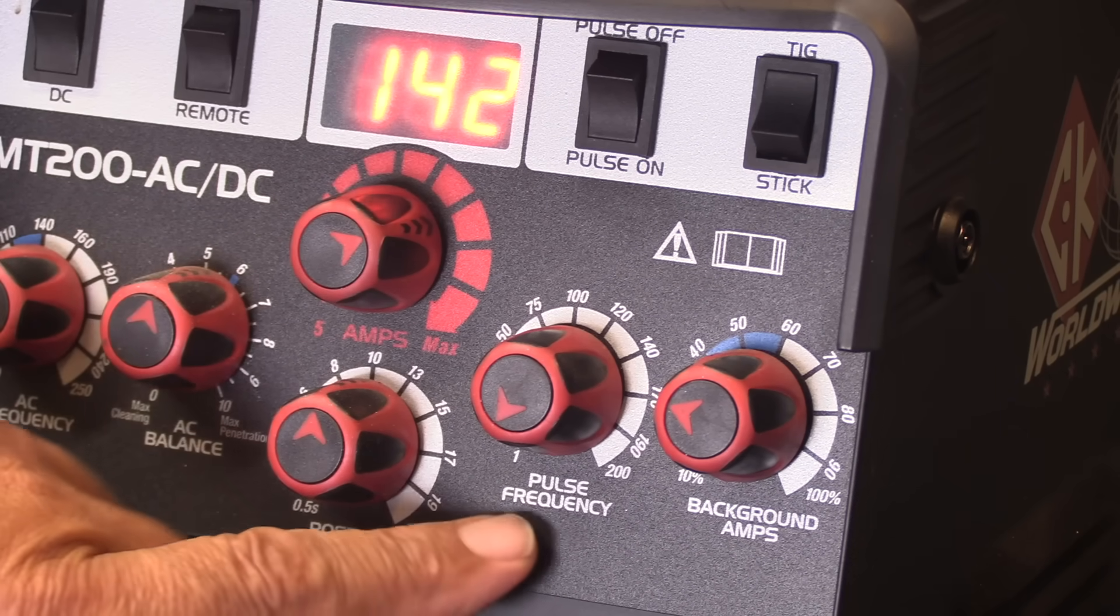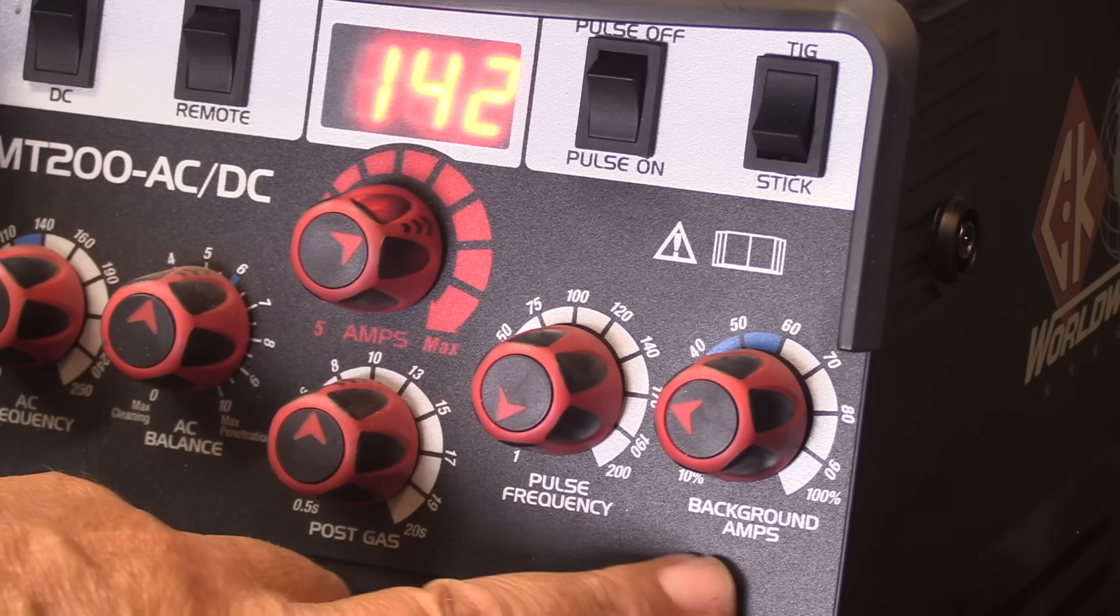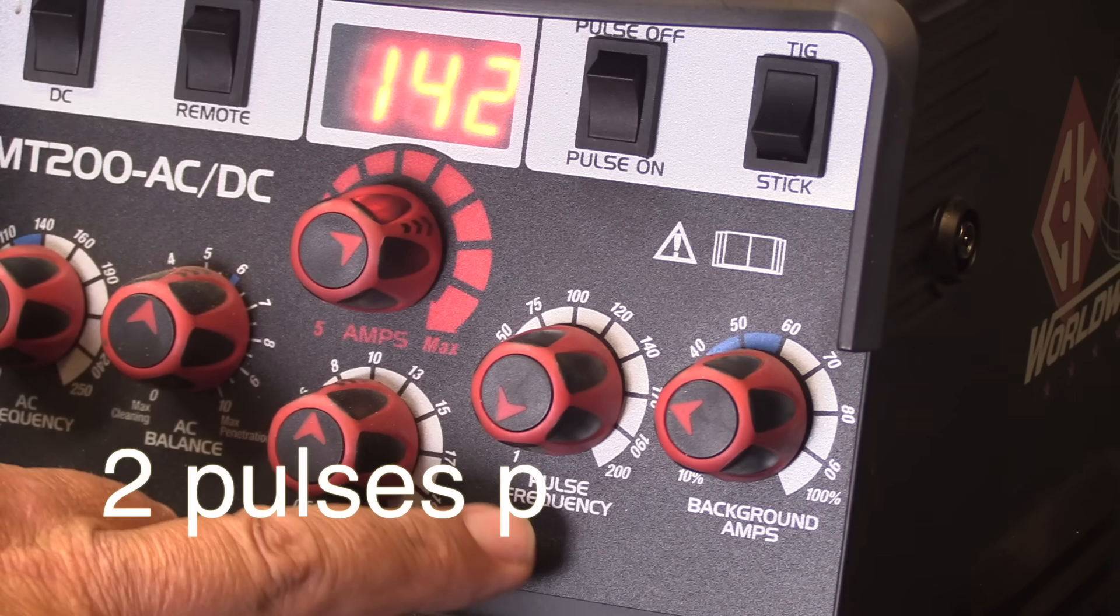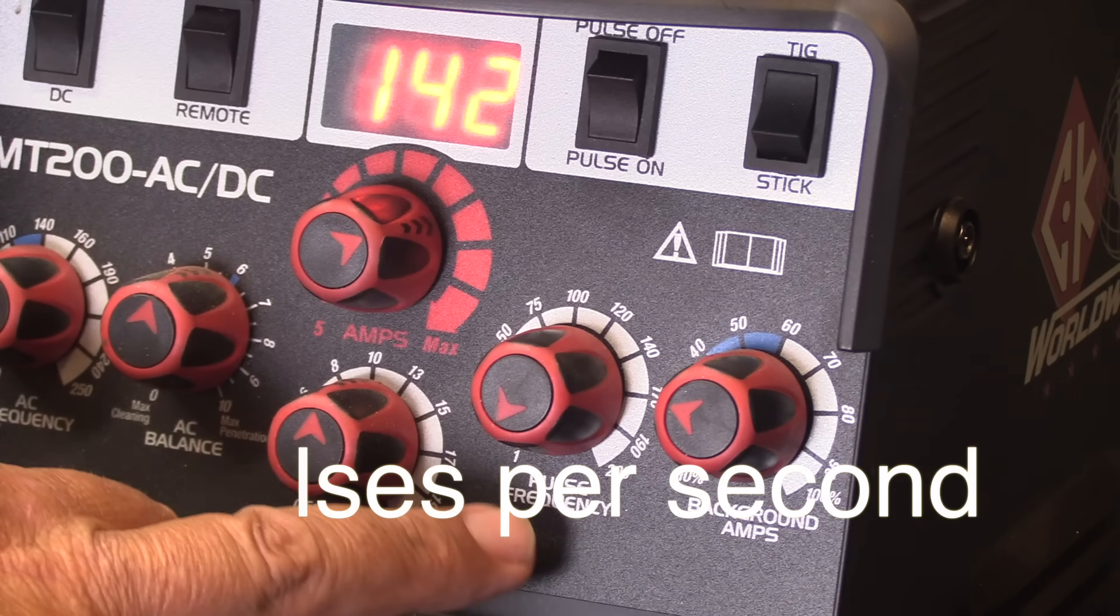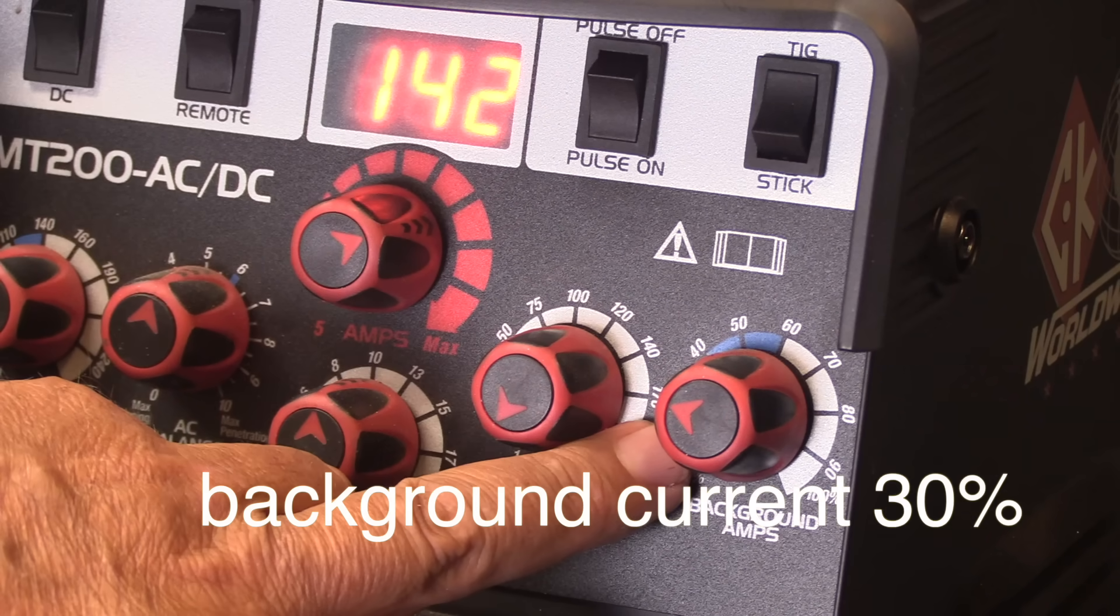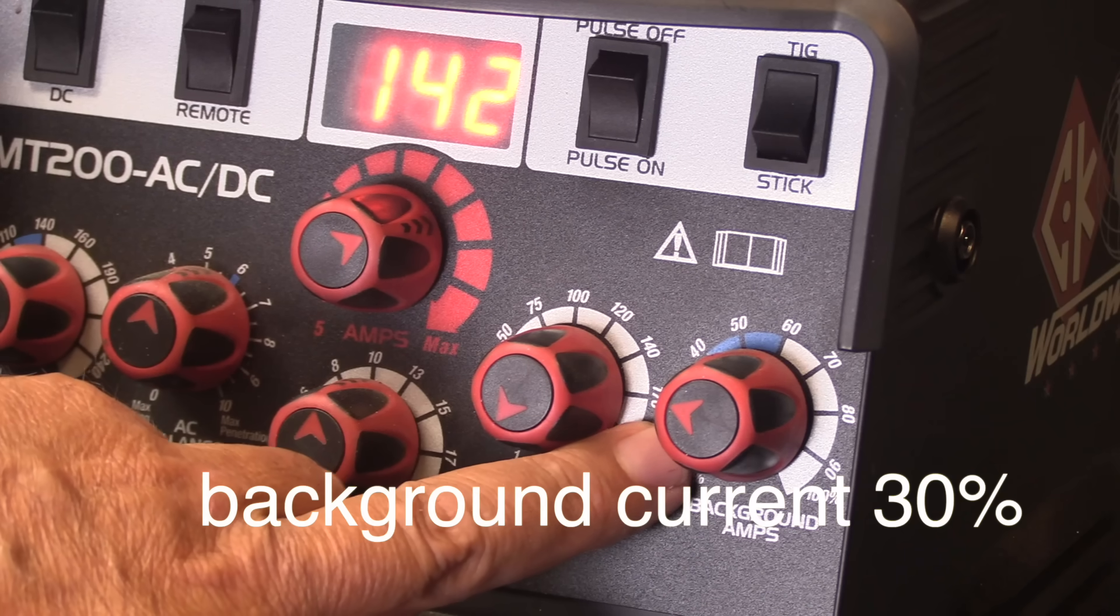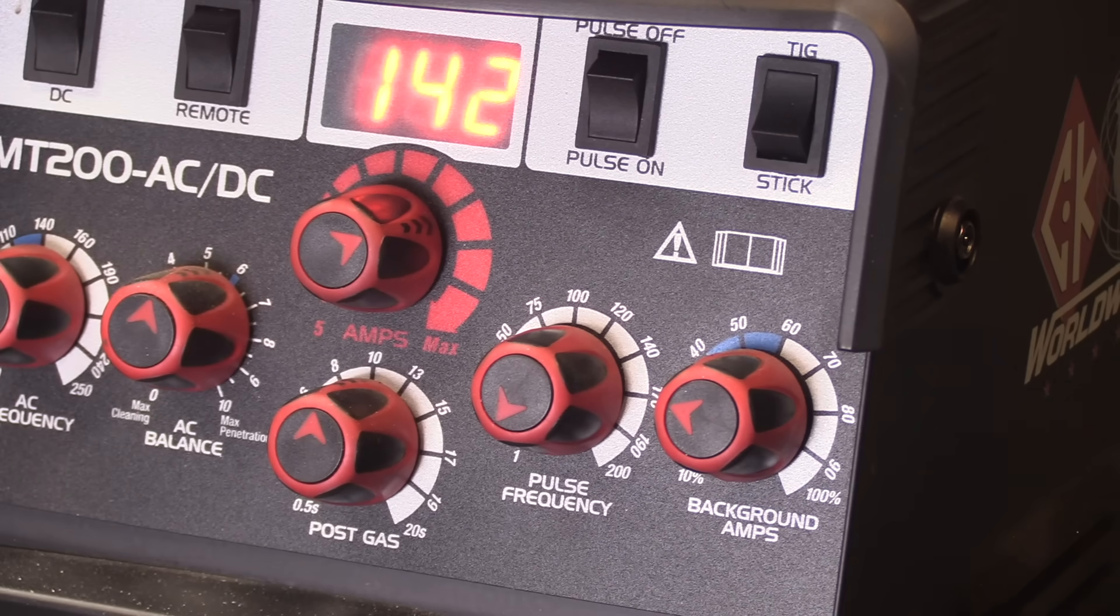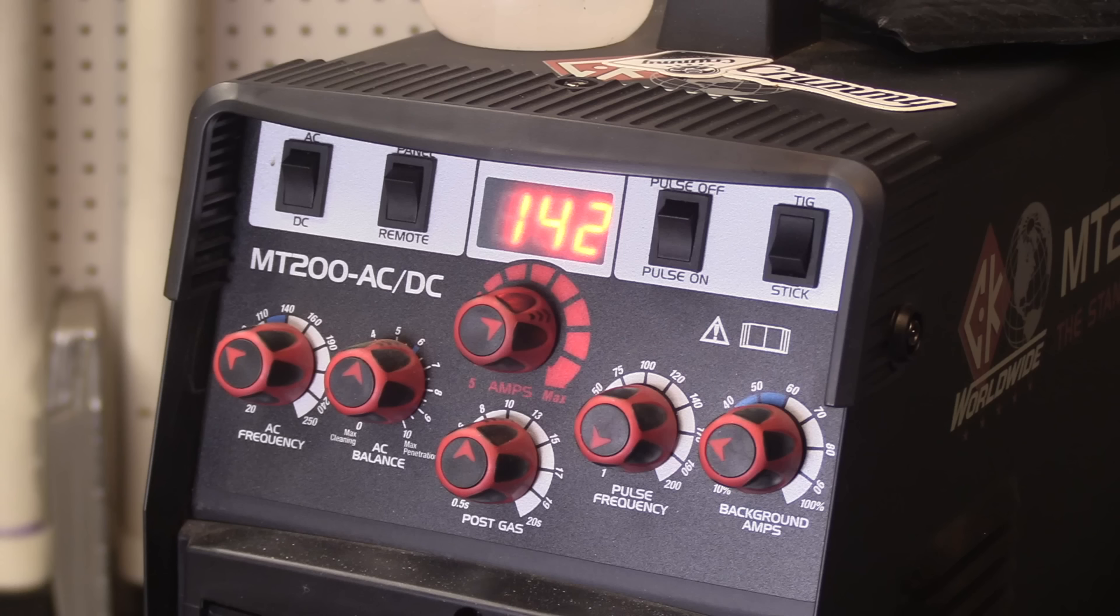I'm increasing the amperage because you always need to do that when you turn the pulser on. You get sort of an average of the pulses and so I'm at two pulses a second and I'm going to set the background amps to around 30 percent which is a good starting point. You can go way higher for different applications but 30 percent is a good place to start.